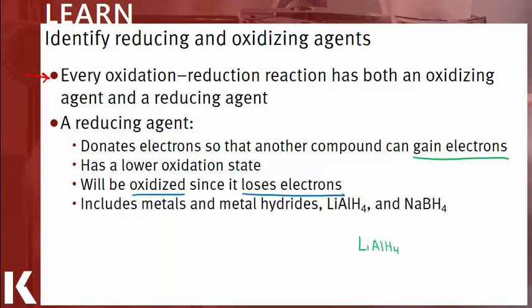GER: gain of electrons reduction. Typical reducing agents include metals and metal hydrides like lithium aluminum hydride and sodium borohydride. Notice the bonds to hydrogen and the lack of bonds to oxygen. Sodium borohydride is a good reducing agent but not as powerful as lithium aluminum hydride. For example, if we had an aldehyde or ketone react with sodium borohydride, the resulting product would be reduced to an alcohol, but this reducing agent won't be able to reduce other molecules like esters, carboxylic acids, or amides.